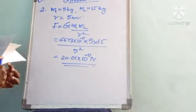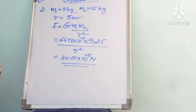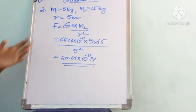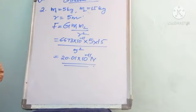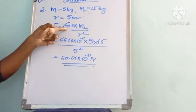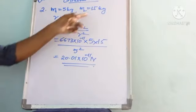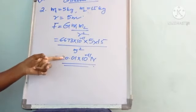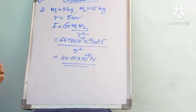To summarize: two bodies m1 = 5 kg and m2 = 15 kg separated by 5 m. Using F = G·m1·m2 / r², substituting G = 6.673×10⁻¹¹, m1 = 5 kg, m2 = 15 kg, r² = 5² gives F = 20.01×10⁻¹¹ N.